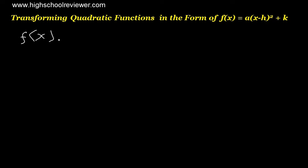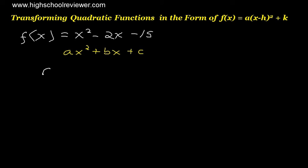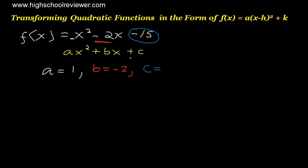Next, we have f(x) equals x squared minus 2x minus 15. This equation is of the form ax squared plus bx plus c. Our a, since we have no number before x squared, that is equivalent to a, and if there is no number, that is understood as 1. Our b is the constant before x, which is negative 2. So our b equals negative 2. Our c is the last term, which is negative 15.